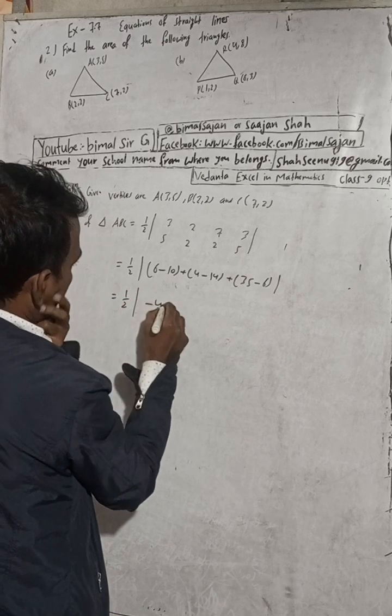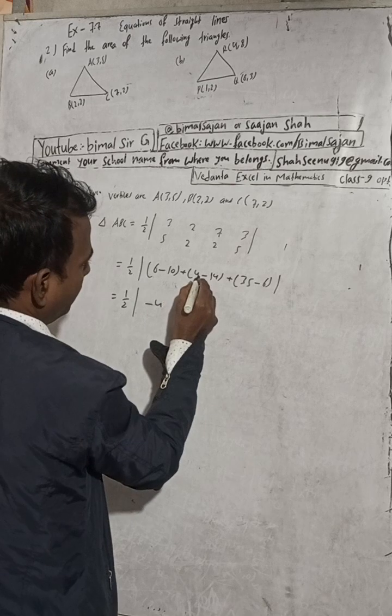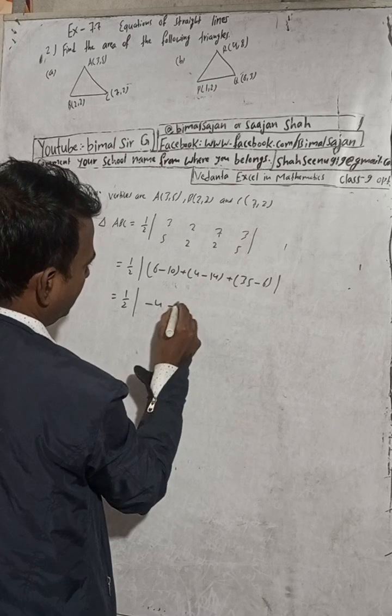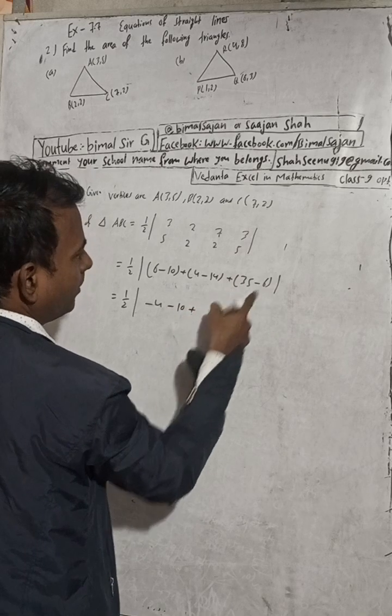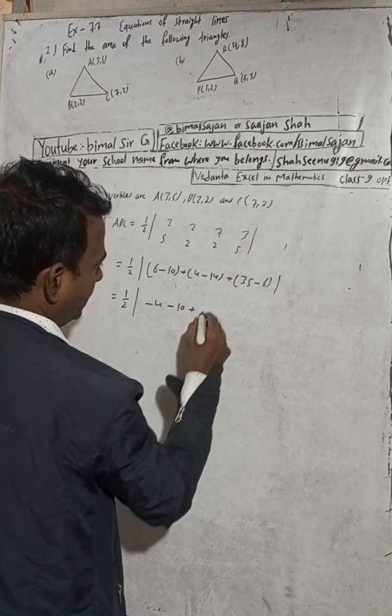This simplifies to minus 4, plus 4 minus 14, plus 35 minus 6. Adding these: minus 10 plus 10, and then plus 29. The result is 29.